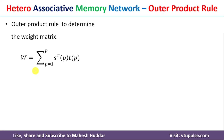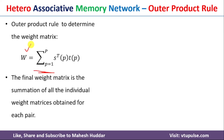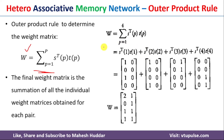Now we take the summation of all four weight matrices: W = S-transpose(1)·T1 + S-transpose(2)·T2 + S-transpose(3)·T3 + S-transpose(4)·T4. We have already calculated all four individual weight matrices. Adding them together gives the final weight matrix: [[2,1],[0,1],[1,1],[1,1]].